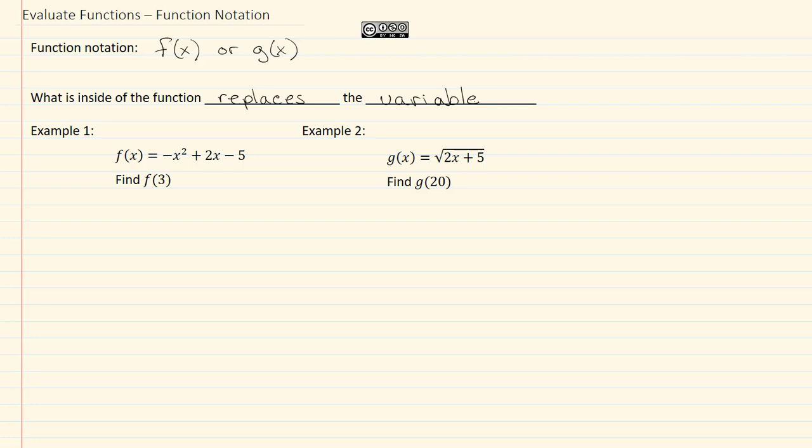So let me show you how that works. In example one, we have f(x) = -x² + 2x - 5. And it says find f(3), that means we want to take this right here and we want to replace our x's in our polynomial with the 3.